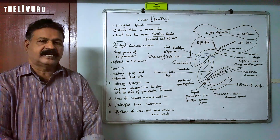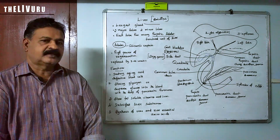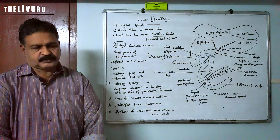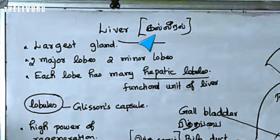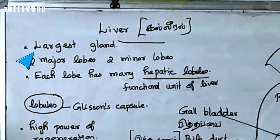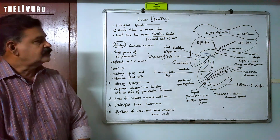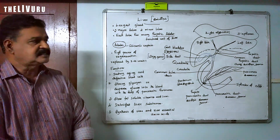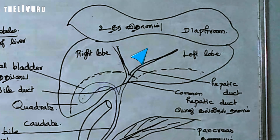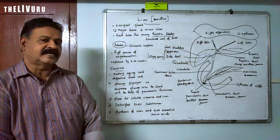We are discussing the glands associated with the digestive system. Now let's look at the liver. The liver is the largest gland in our body. It is located beneath the diaphragm. The diaphragm is a thick musculature which separates the thoracic and abdominal cavity.